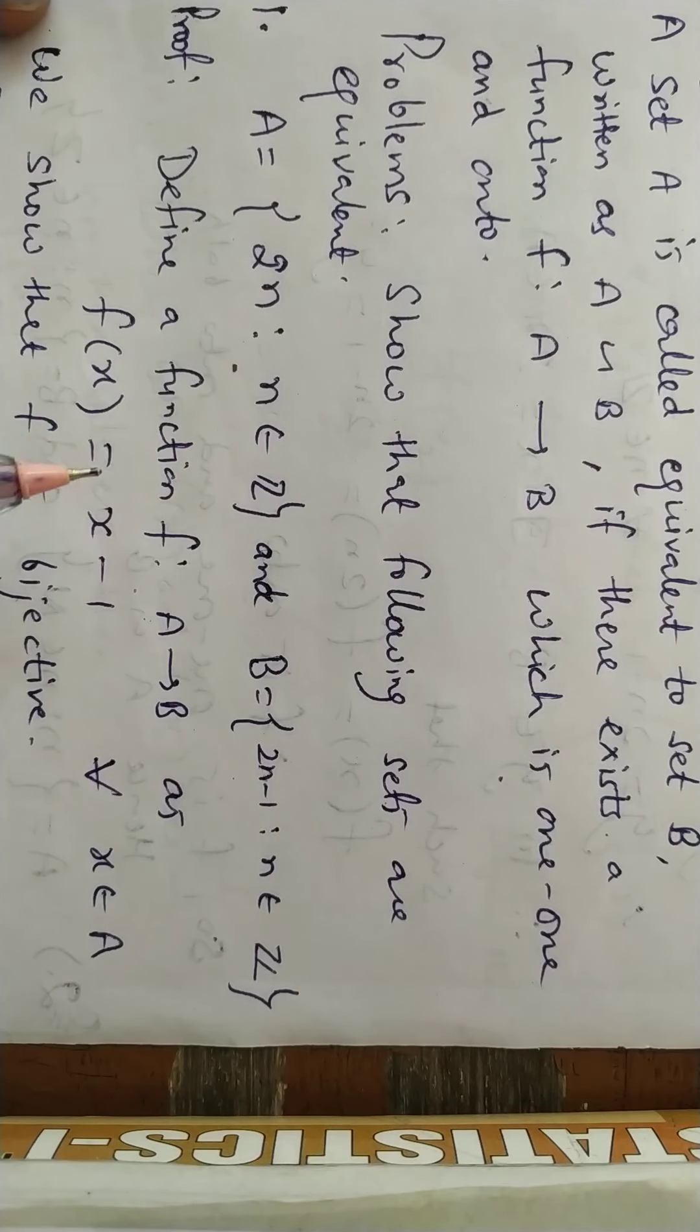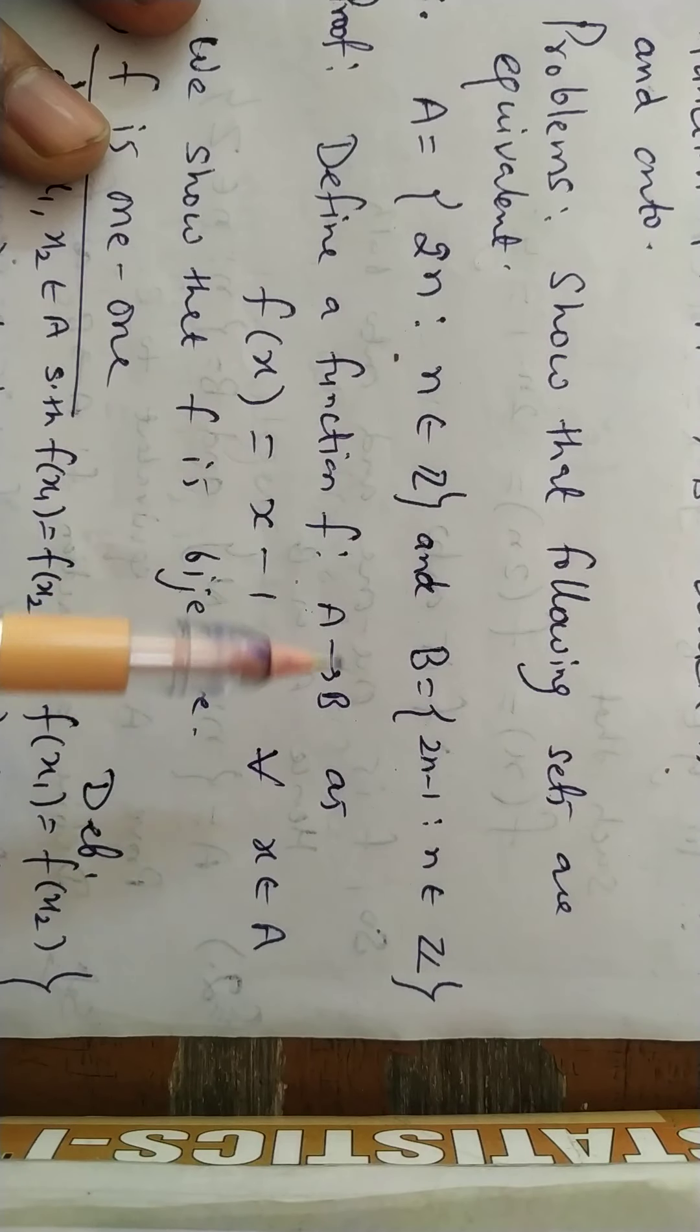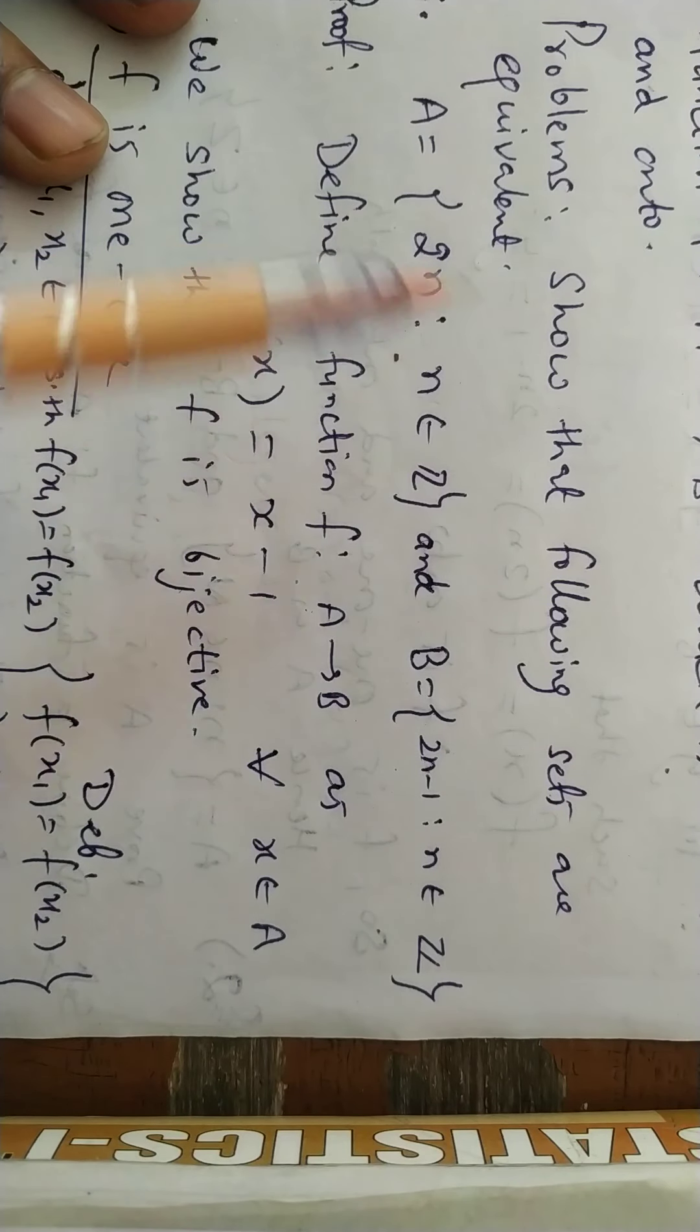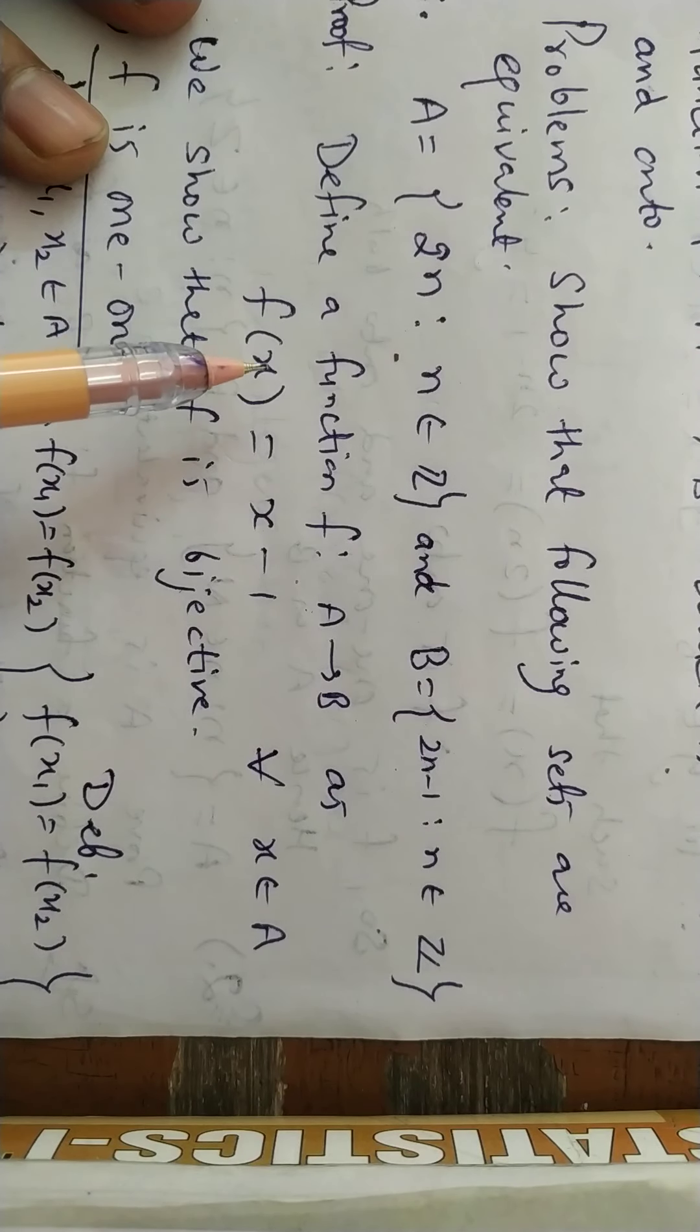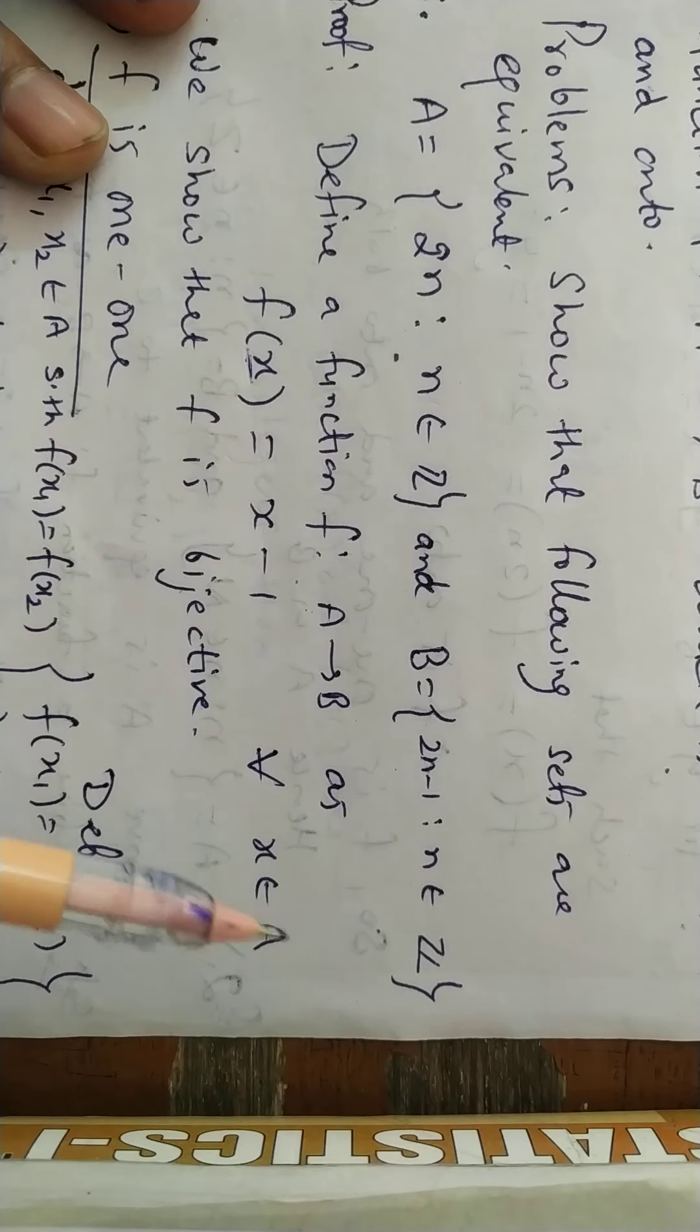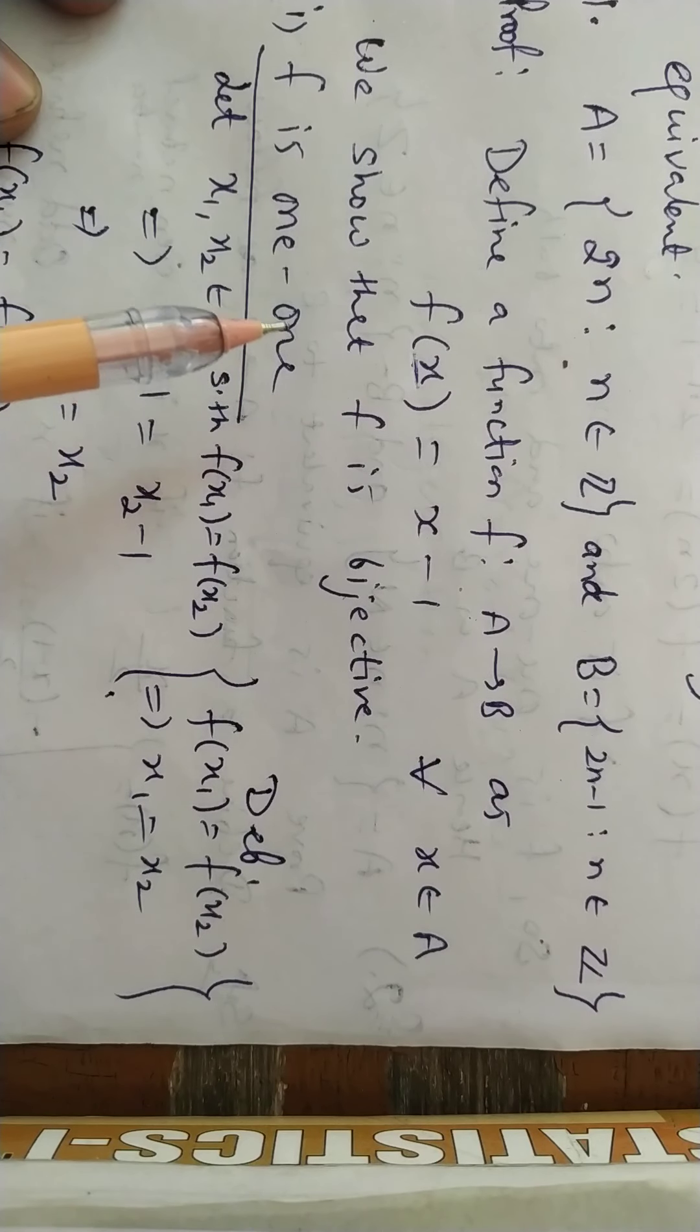So I have to define a function. Whenever I have to show equivalence, I have to create a function f from A to B. If this is 2n, then it becomes A, and in B it's minus 1. So I define the function f(x) = x - 1, because the element we put into f is basically an element of set A. So for all x belonging to A, I have to show it's 1-1 and onto.